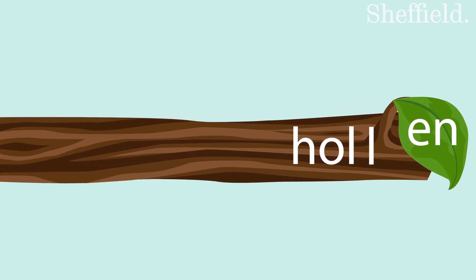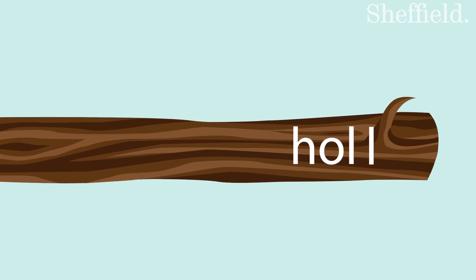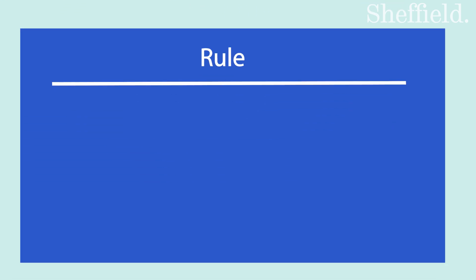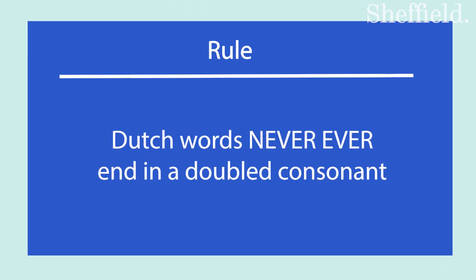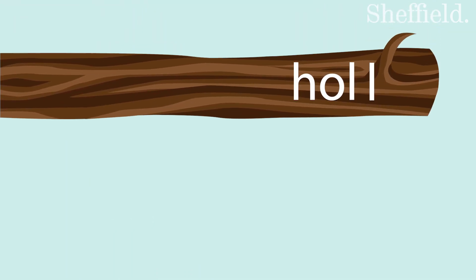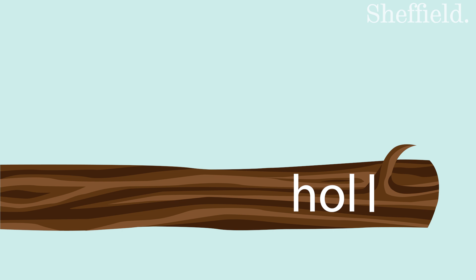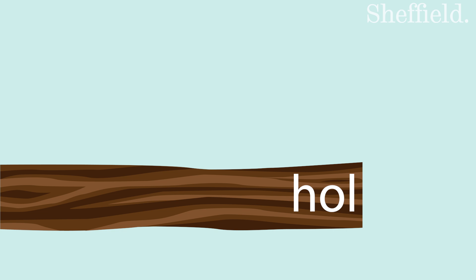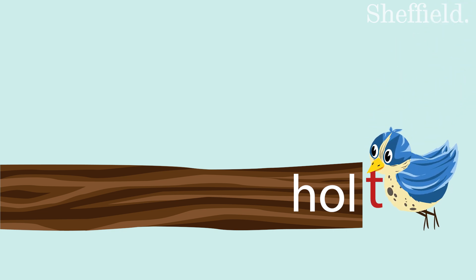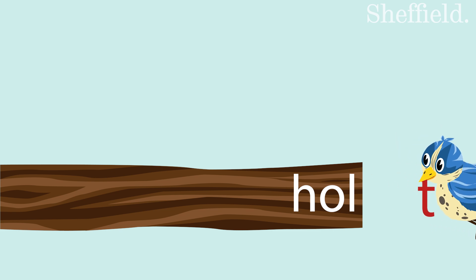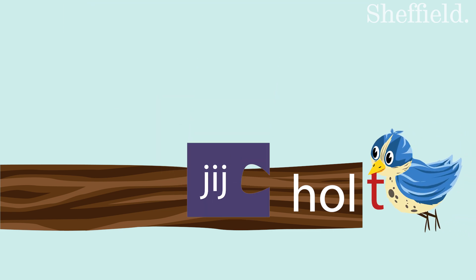Let's find the stem for hollen. First, we chop off the -en at the end. We are left with a stem that ends in a double consonant — like jazz. But Dutch words never, ever end in a double consonant — the same consonant twice — except jazz, which is a loan from English. So after chopping off the -en, we get holl, but the double L is against the spelling rules. All we have to do is chop off one of the consonants, making the stem of hollen: hol. Now add a T for second and third person — ik hol, jij holt, hij holt.